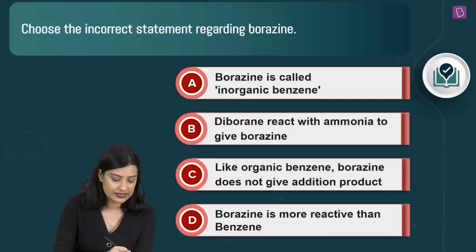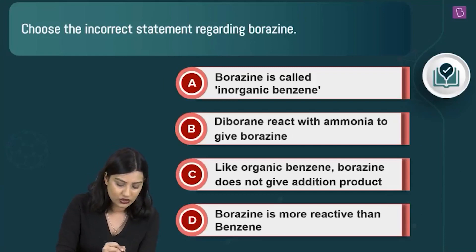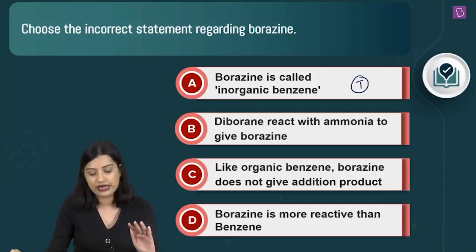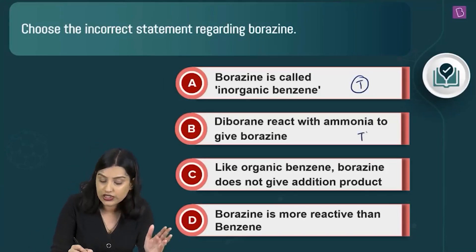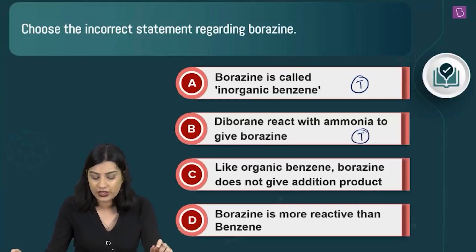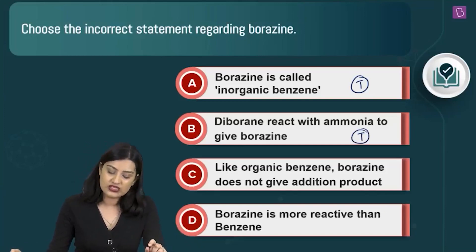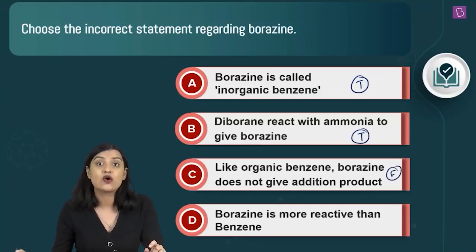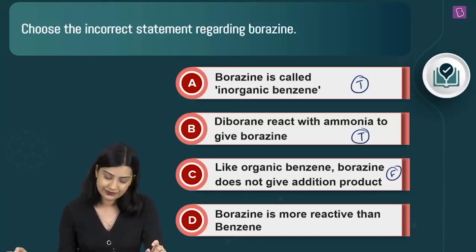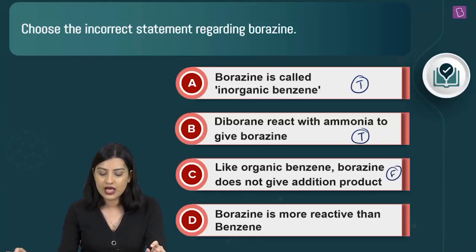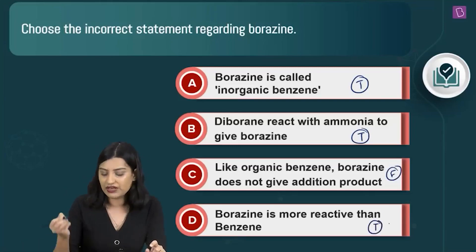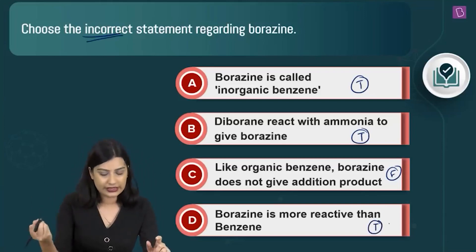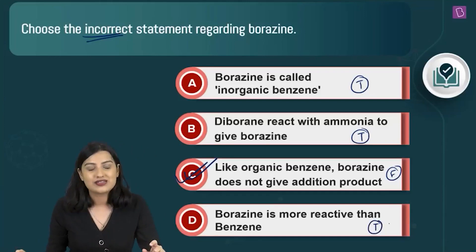Evaluating each option: (A) borazine is called inorganic benzene — true; (B) diborane reacts with ammonia to give borazine — true; (C) like organic benzene, borazine does not give addition products — false, borazine does give addition products; (D) borazine is more reactive than benzene — true. Only one false statement exists, so option C is the correct answer.